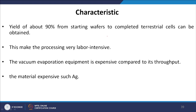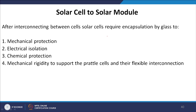The yield from starting wafers to complete terrestrial cells is about 90%. However, the process is very labor intensive, the vacuum evaporation equipment is expensive relative to throughput, and materials such as silver are expensive. These factors make the cost of production very high.